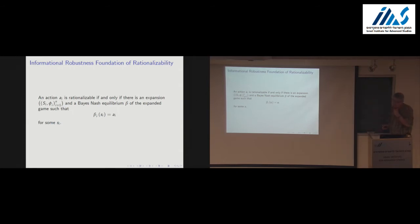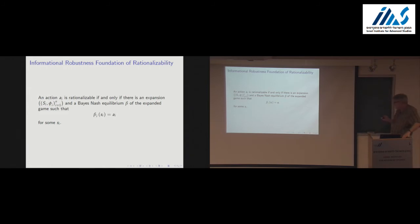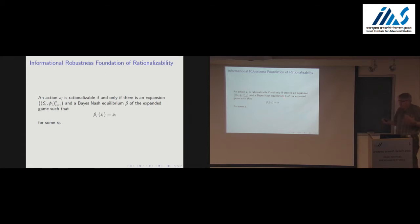There's an analogous informational robustness result for rationalizability — precisely parallel. The precisely parallel statement is that action a-i is rationalizable if and only if there is some expansion — now without the common prior assumption — and a Bayes-Nash equilibrium beta of the expanded game, such that there exists some signal s-i at which action a-i is being played.